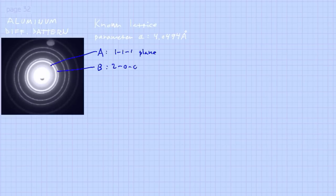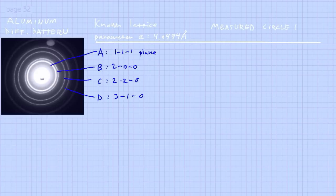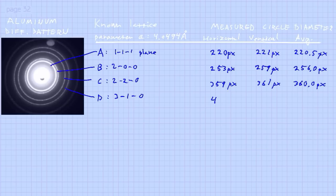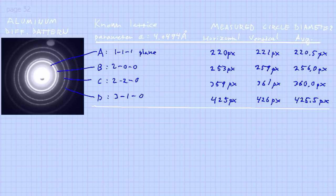So we have a diffraction pattern from the aluminum calibration sample and the molybdenum trioxide. We're going to measure the diameter of the four inner rings in the sputtered aluminum pattern. If you measure the horizontal diameter of the inner ring you get 220 pixels, and in the vertical direction 221 pixels — essentially the same. However, the second inner ring gives 253 pixels horizontal versus 259 pixels vertical. This discrepancy is caused by astigmatism of the system — of course the circles should be completely round.